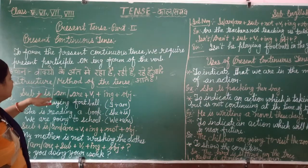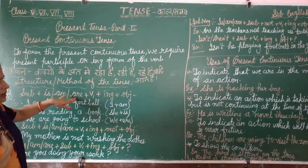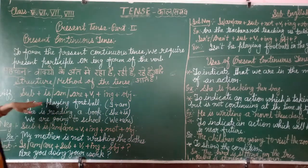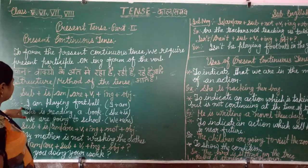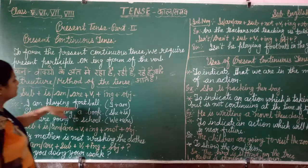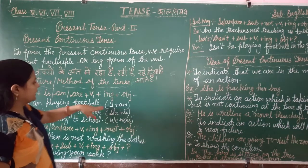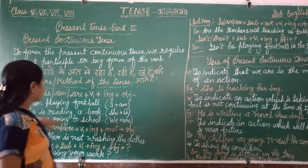Now, where we use am, where we use is, and where we use are. We use am with I — always we use am with I. For example: I am playing football. Here we use I plus am.